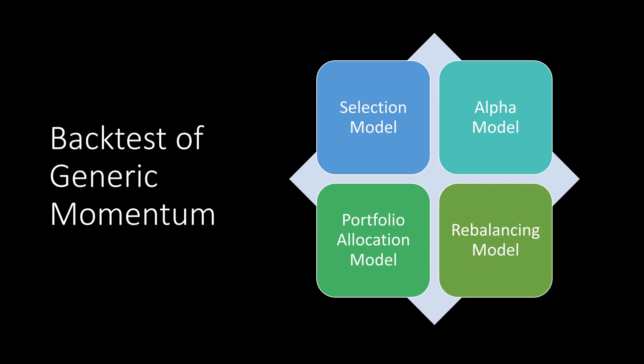I am going to use a simple generic algorithm for stock picking. To be able to test it, we need to implement the following four models: selection model, alpha model, portfolio allocation, and rebalancing model.